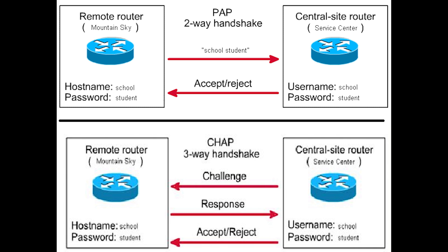The challenge and response mechanism happens multiple times during the connection without the user being aware of it. PAP authentication only requests at the initial time of establishing the link, while CHAP can do it multiple times — at the initial connection and after establishing a link — meaning it can do repeated mid-session authentication.